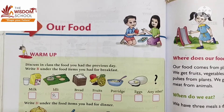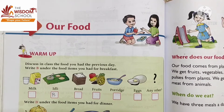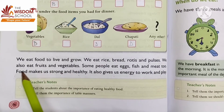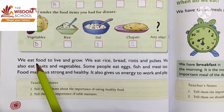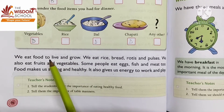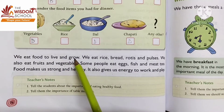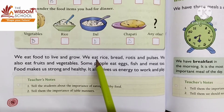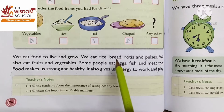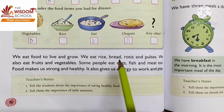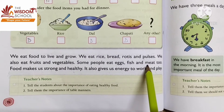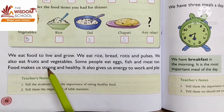Good morning students, welcome to your EVS class. Today we are going to read the remaining portion of Chapter 14: Our Food. In this chapter we have read about why food is important for us. Food is important because with the help of food we live, grow, and survive. We have also read that we eat different kinds of food items like rice, bread, rotis, and pulses, along with fruits and vegetables. Some people are non-vegetarians who consume eggs, fish, and meat. With the help of food we become strong and healthy.